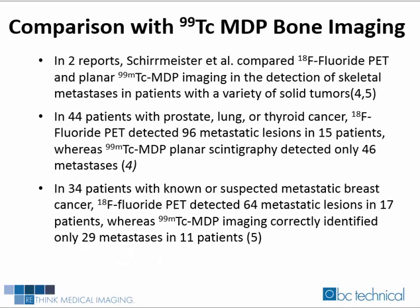Let us now review a comparison between F-18 bone imaging and technetium-99M MDP bone imaging. In two reports, Schurmeister compared the two imaging methods in the detection of skeletal metastases in patients with a variety of solid tumors. Referencing the 1999 article from the Journal of Nuclear Medicine, in 44 patients with prostate, lung, or thyroid cancer, F-18 PET detected 96 metastatic lesions in 15 patients, whereas technetium-99M MDP planar scintigraphy detected only 46 metastases. Also referencing the 1999 article from the Journal of Clinical Oncology, in 34 patients with known or suspected metastatic breast cancer, F-18 PET detected 64 metastatic lesions in 17 patients, whereas technetium-99M MDP imaging correctly identified only 29 metastases in 11 patients.